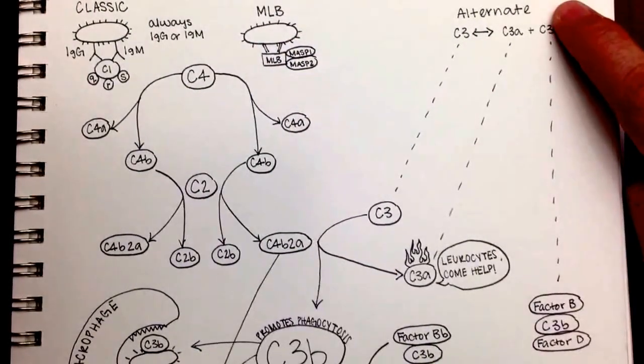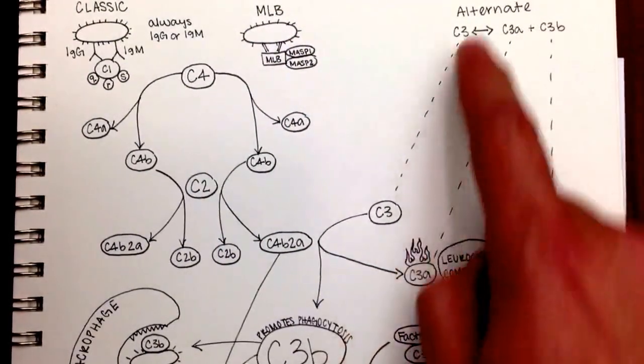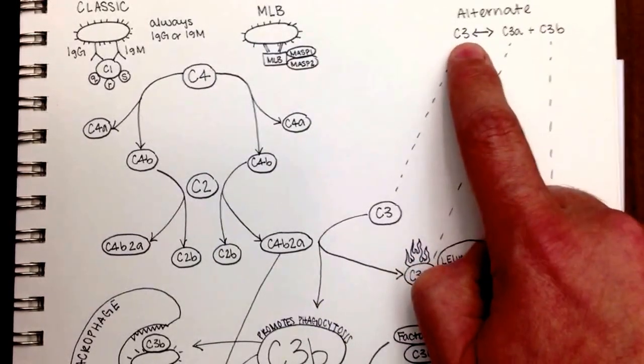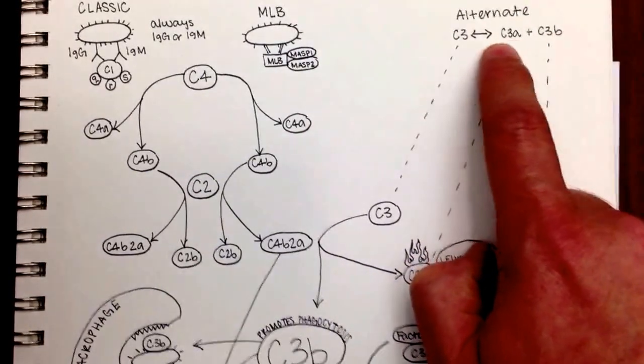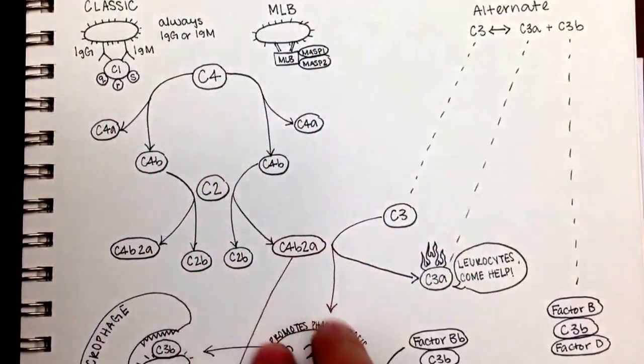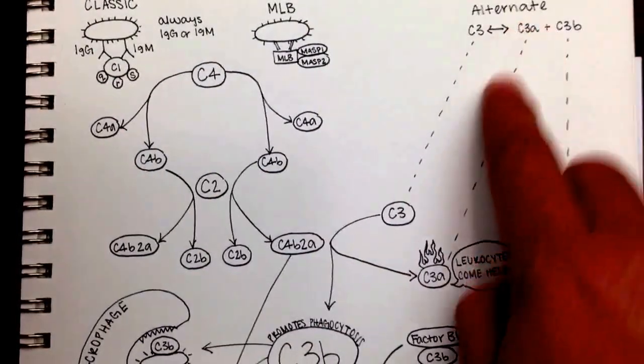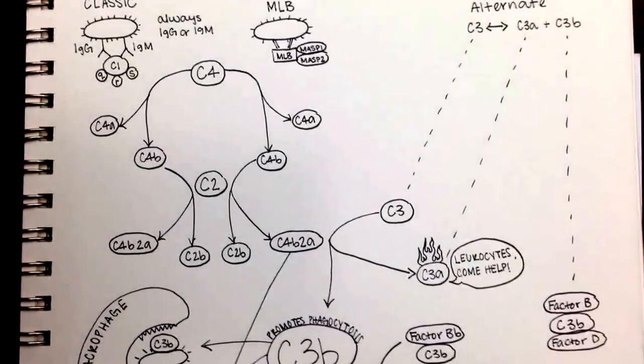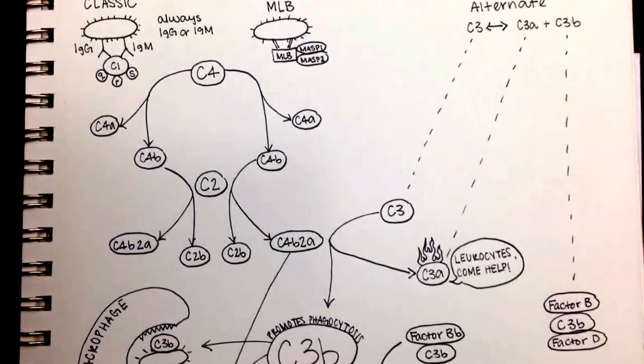The third pathway is the alternate pathway. And as you can see here in the alternate pathway, C3 will just randomly cleave into C3a and C3b. So this way, we got there by all these steps. And with the alternate pathway, we just go straight to C3b. So now that we're at C3b, we can take a look over here at the alternate pathway a little more.